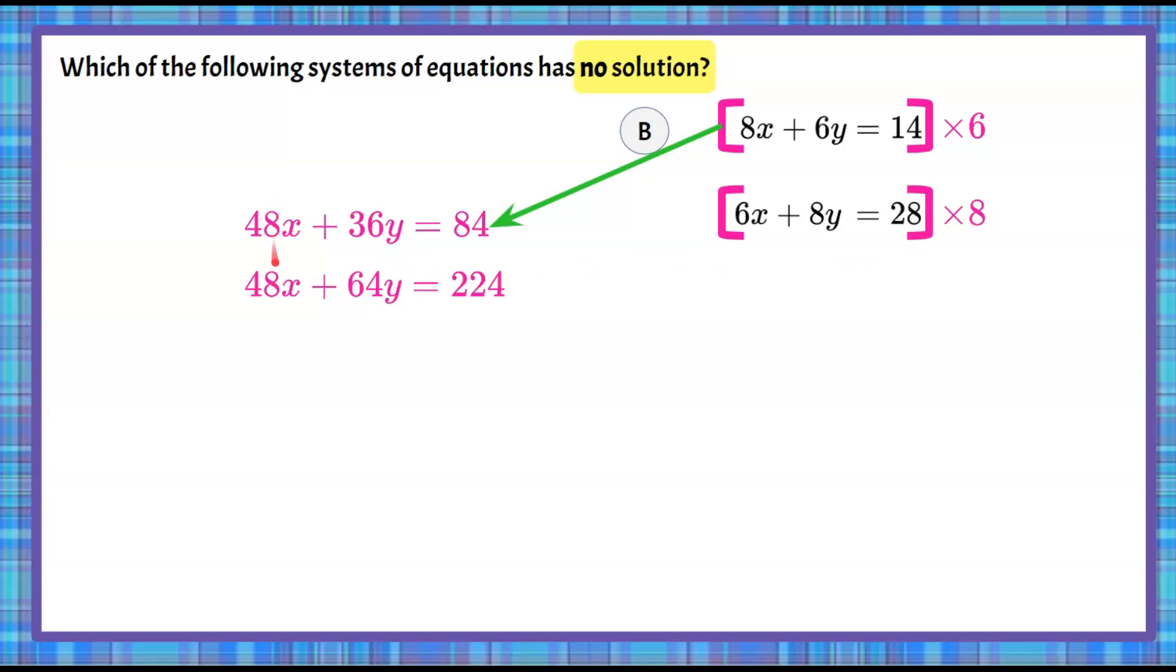Now we have the same coefficient, so we're going to subtract. Here we have our 0 pair, and when we subtract, we have to subtract everything, all like terms. So 48x subtract 48x is a 0 pair. 36y subtract 64y is negative 28y, and 84 subtract 224 is negative 140. Divide both sides by negative 28, and we get that y is equal to 5.